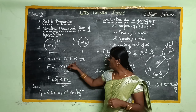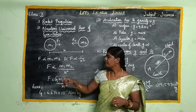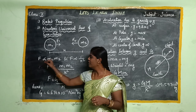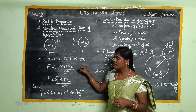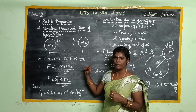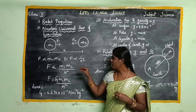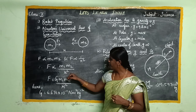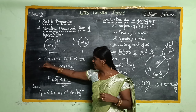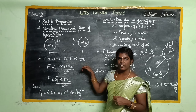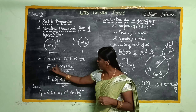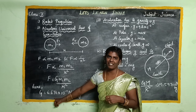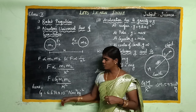The masses are M1 and M2, and the distance is R. F is proportional to M1 times M2 divided by R squared. This is directly proportional in the numerator and inversely proportional in the denominator. Removing the proportionality, we introduce the constant G. So F equals G times M1 times M2 divided by R squared. G is the universal gravitational constant and its value is constant.